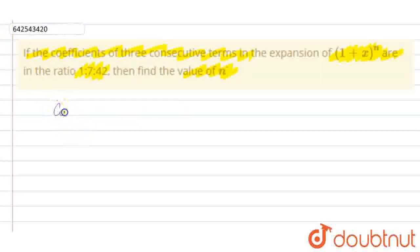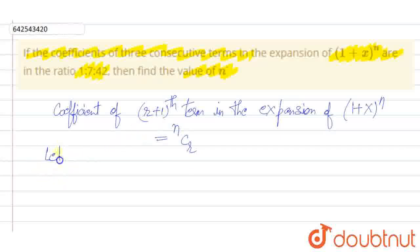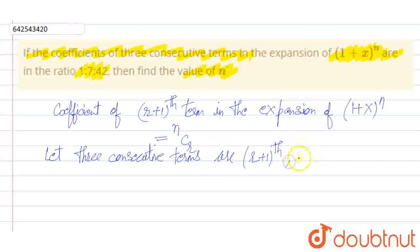The coefficient of the (r+1)th term in the expansion of (1+x)^n is given as nCr. So, let's assume three consecutive terms: the (r+1)th term, the (r+2)th term, and the (r+3)th term. These three terms have coefficients in the given ratio.